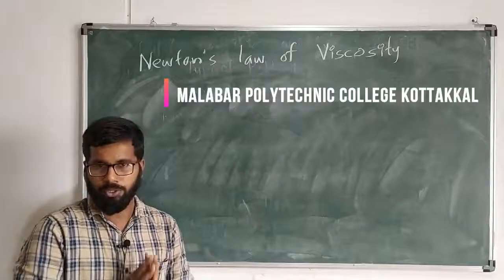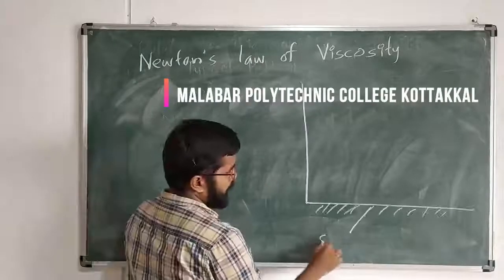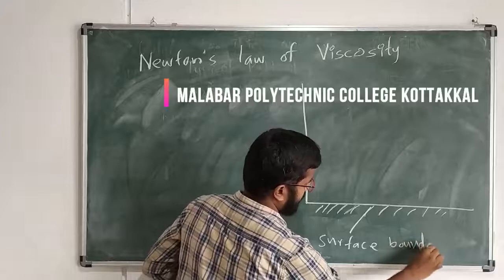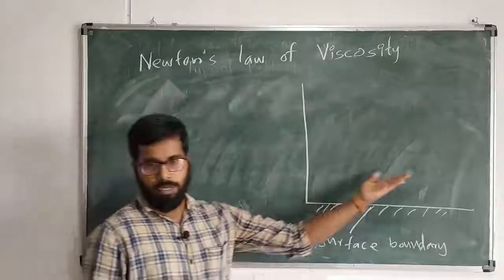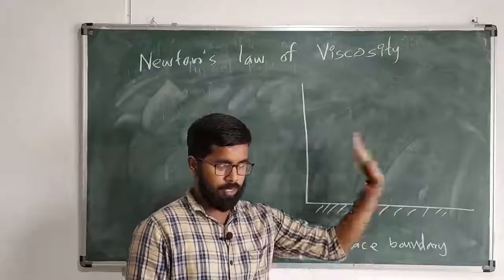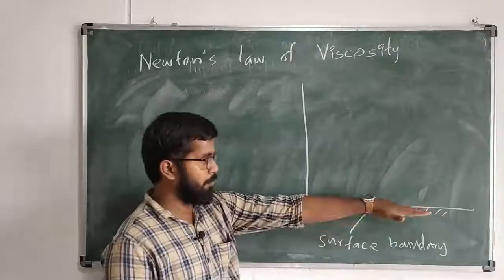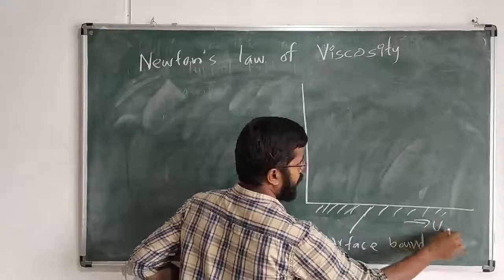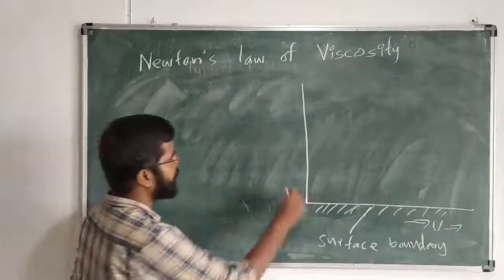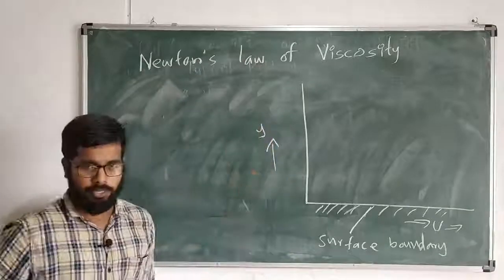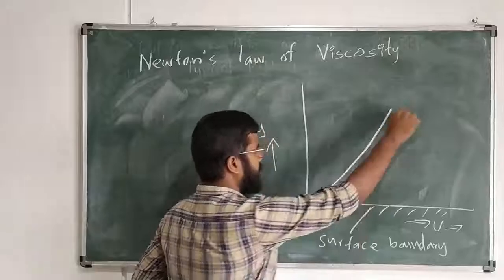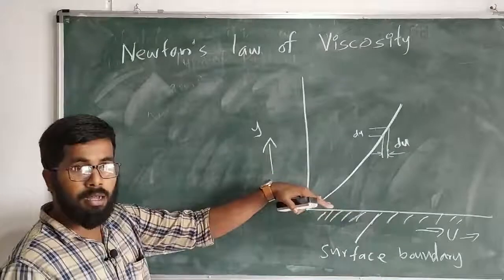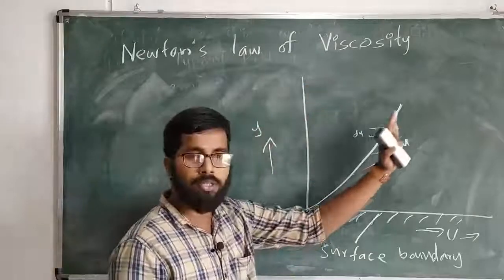What is Newton's law of viscosity? Let's take a look at the graph. This describes a surface boundary — the liquid flows. The layer is considered low. Here we have velocity and distance. Let's see how this graph looks. This layer — the lower layer of the upper layer — the velocity goes down.